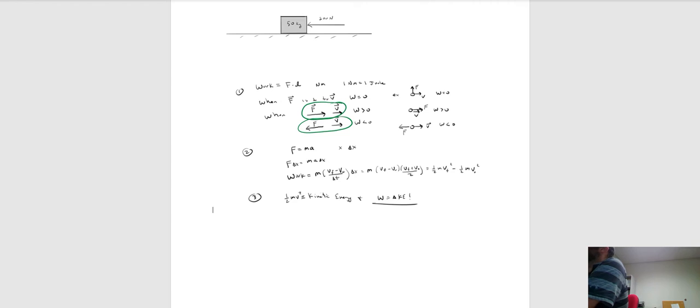So to summarize: work is force times distance, but the force has to be parallel to the distance. Whenever the force makes a right angle there's no work done. When the force is in the direction of motion the work is positive, and when the force is in the opposite direction of motion the work is negative. Now let's get into why this matters.